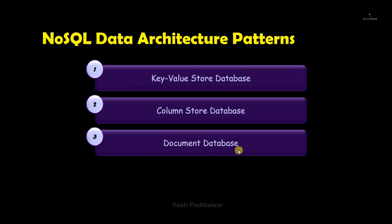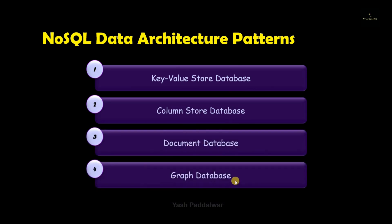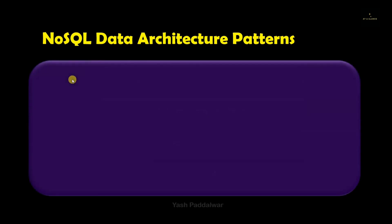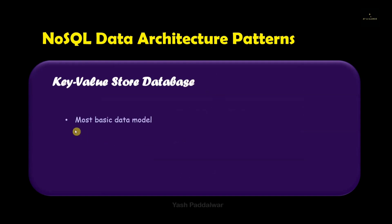First is the key-value store database. Next we have the column store database. Next, document database. And lastly we have graph database. All these databases are very much important when it comes to NoSQL. Let's start looking into detail in all of them one by one, starting with key-value store database.